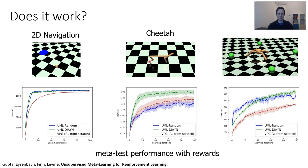Here's an evaluation of this method on a 2D goal navigation task, a half-cheetah running forward and backward task, and an ant walking to different locations task. Crucially, during meta-training no hand-specified tasks were provided, and the test-time tasks are based on tasks used in prior work on fully supervised meta-RL. The green line shows the unsupervised method with optimal task proposals, the red line shows training from scratch, and the blue line shows random task proposals. The optimal task proposals tend to do the best or as well as the best, but even random task proposals can do very well in some cases — indicating that unsupervised meta-RL is potentially a very promising framework for acquiring powerful adaptation strategies.